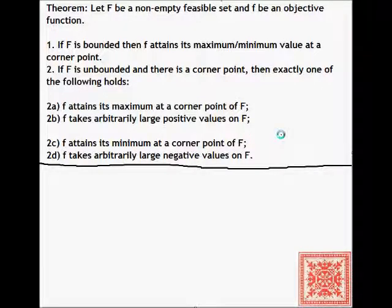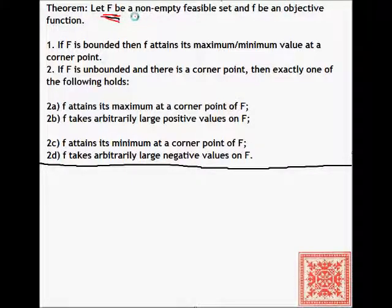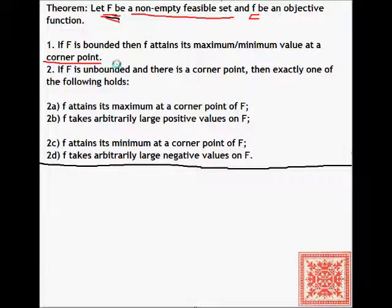Let's consider the fundamental theorem of linear programming. We'll state it and exemplify it without proof. If the feasible set F is non-empty and f is an objective function, then: if F is bounded, then f attains its maximum or minimum value at a corner point. So all we have to do is find corner points — if F is bounded and non-empty, the maximum and minimum will be found at a corner point.